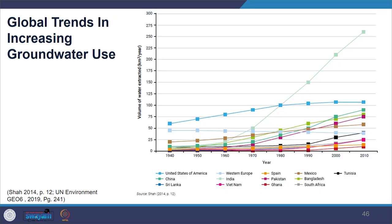Moving on, we will look at water withdrawal rates. The following image shows global trends in increasing groundwater use. Look at the increase in groundwater usage in India and other countries. Water demand varies across geographies and contexts such as urban or rural areas, and also varies culturally and according to geography.